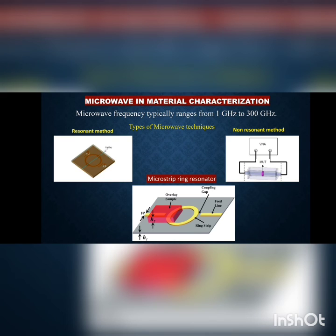Microwave frequency typically ranges from 1 GHz to 300 GHz, as per standard definitions. The first microwave technique is the resonant method, in which we interact the sensor with the dielectric material, perturbing the field distributions. It is very convenient because it provides high accuracy and precision.